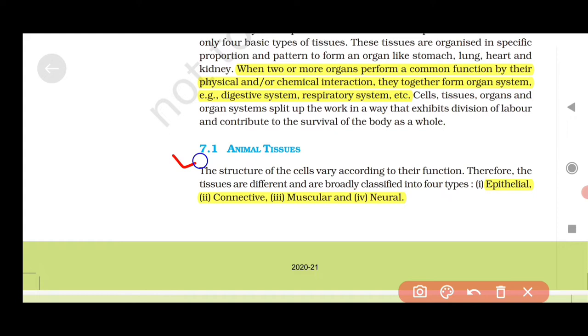7.1 Animal Tissues: The four types are epithelial, connective, muscular, and neural.